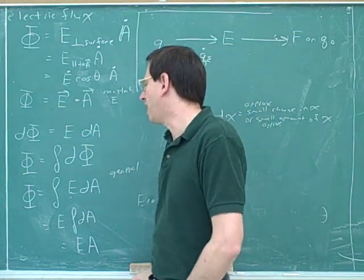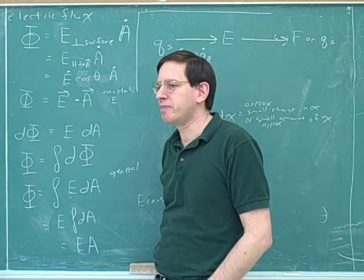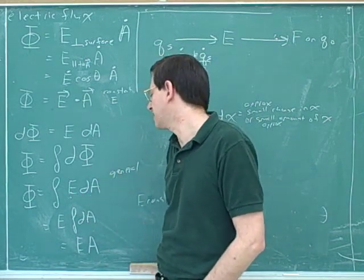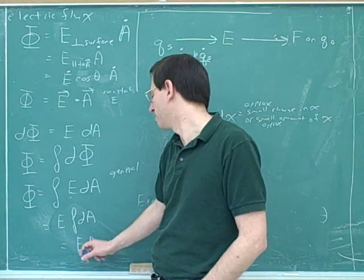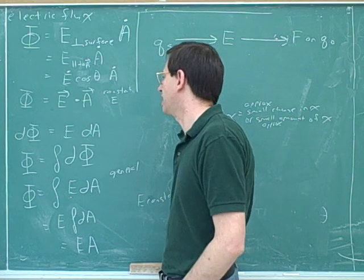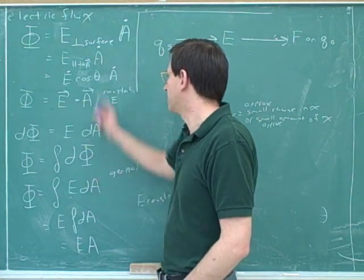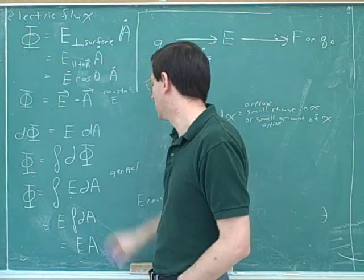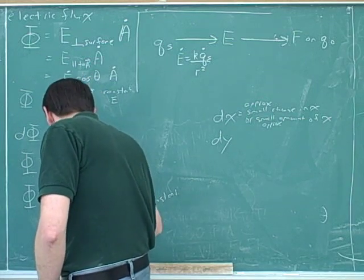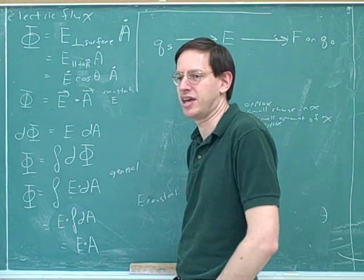This is what's going to happen to you a lot. You're expected to know the general integral formula for this course; however, the vast majority of problems you do are actually going to have constant E's, because otherwise the math gets too hard. But you're still expected to start with the integral form and get the simplified formula by pulling E out of the integral. So you're expected to know the general formula, but you'll usually end up using the simplified formula. I've been assuming E was parallel to the area vector because I haven't been focusing on cosine theta, or we could say these are all dot products.